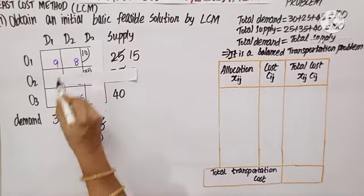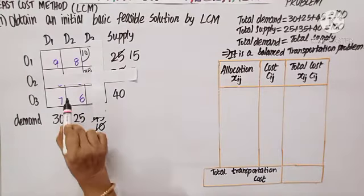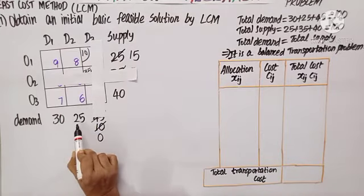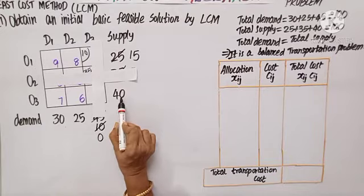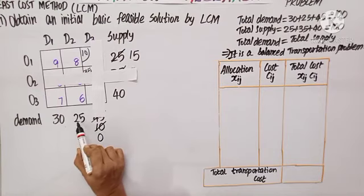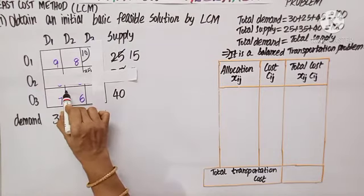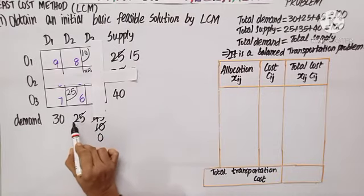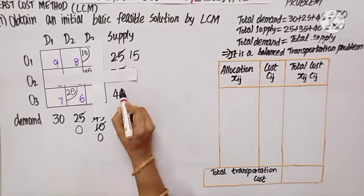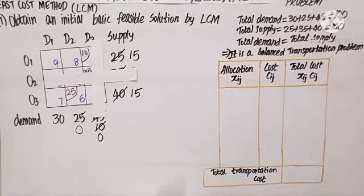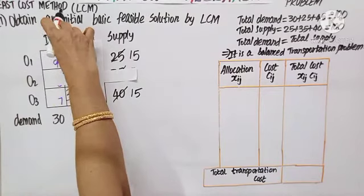The remaining costs are 6, 7, 8, 9 — so 6 is the minimum. This is the next cell to be allocated. Here I have supply 25 and demand 40. Out of 25 and 40, the minimum is 25. So I allocate 25 here — this becomes 0, and demand becomes 40 minus 25, which is 15. The second column is now done, so let us hide it.